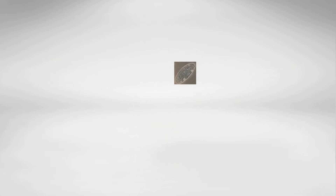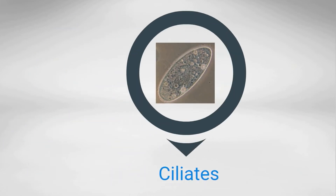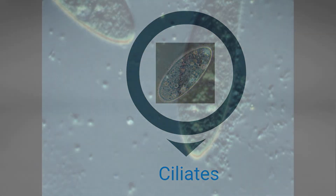Ciliates are protists that move using tiny hairs called cilia. The protist paramecium is an example of a ciliate. Check out how it moves about.